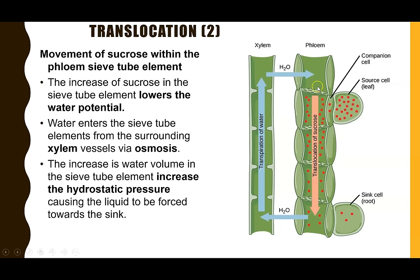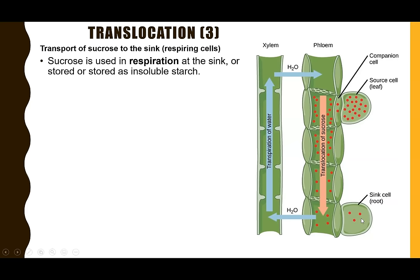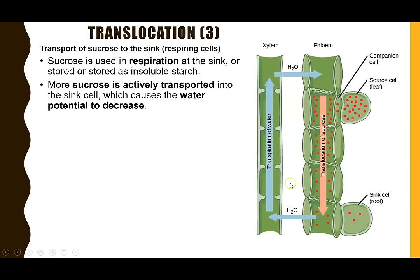That high hydrostatic pressure forces the liquid towards an area of lower hydrostatic pressure. At the sink cell, respiration is constantly using up glucose and sucrose, or converting it into insoluble starch. More sucrose is then actively transported from the sieve tube element into the sink cell. Because lots of sucrose is being transported into the sink cell, the water potential there decreases.